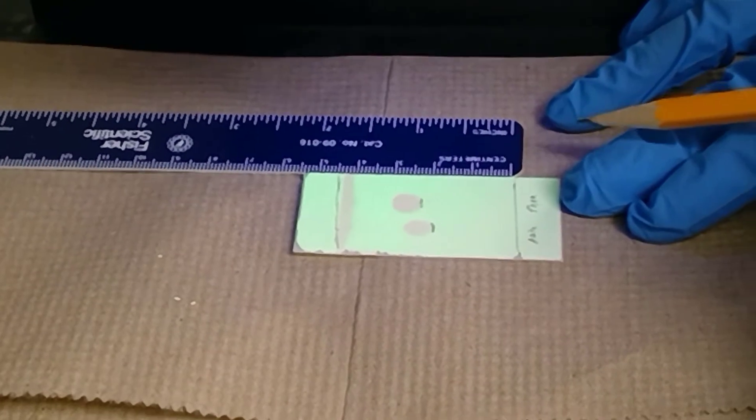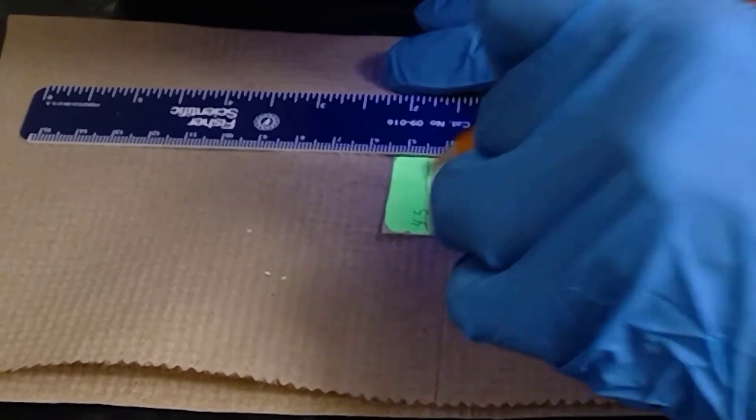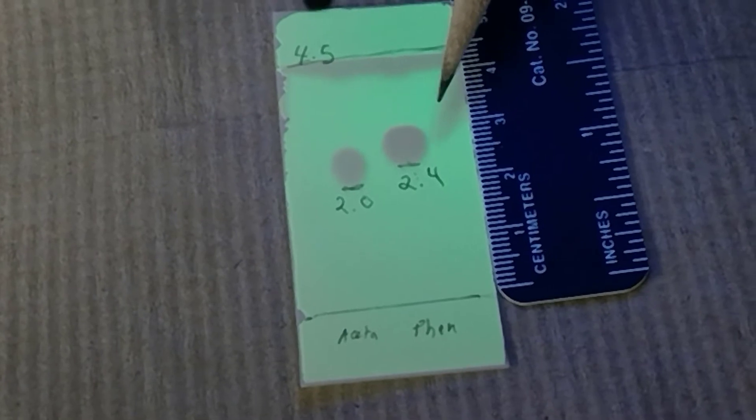All of these values written down are in centimeters. For our acetaminophen, we have a value of 2 centimeters. For phenacetin, we have 2.4 centimeters. And our solvent front gave us a value of 4.5 centimeters.